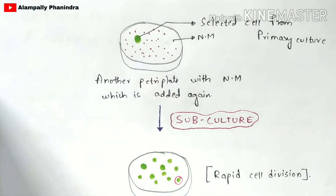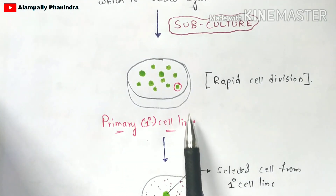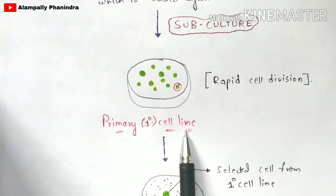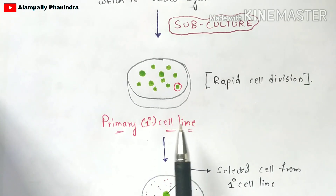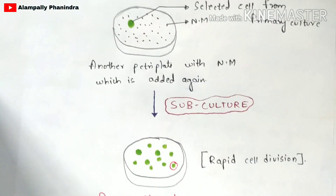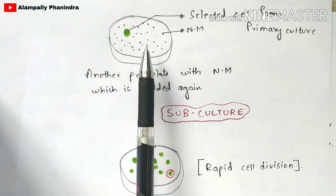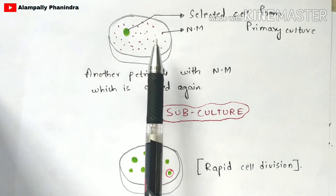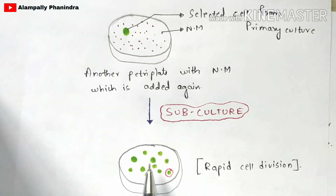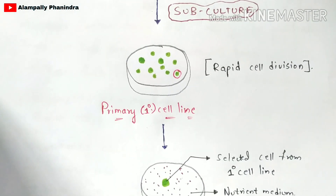You then subculture it — that is, you incubate it again. The cell placed in the nutrient medium uses the total nutrients present in the medium and undergoes rapid cell division or proliferation, causing an increase in the number of cells. This result is called the primary cell line.